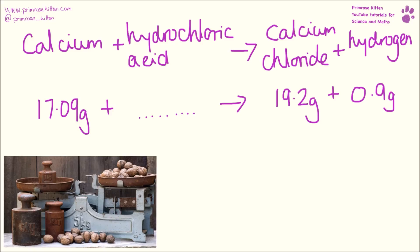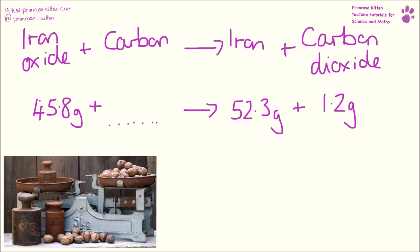Here we have calcium reacting with hydrochloric acid, making calcium chloride and hydrogen. We need to know how much hydrochloric acid we get and that is going to be 3.1. Here we have iron oxide and carbon reacting to make iron and carbon dioxide, and the amount of carbon we are going to need is 7.7 grams.